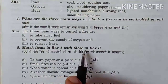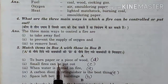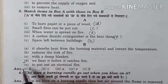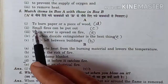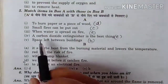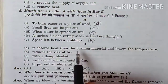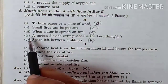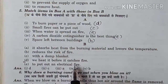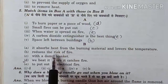Match items in box A with those in box B. To burn paper or a piece of wood — matches with D: we heat it before it catches fire. Small fires can be put out — matches with C: with a damp blanket. When water is spread on fire — it absorbs heat from the burning materials and lowers the temperature. Carbon dioxide extinguisher is the best thing — matches with E: to put out an electrical fire. Space left between buildings — matches with B: to reduce the risk of fire spreading.